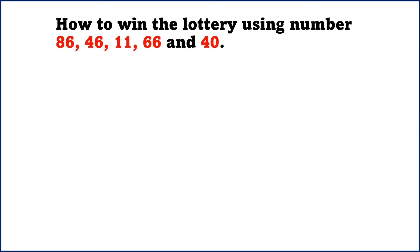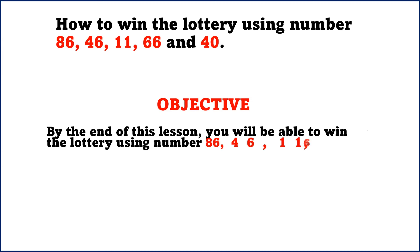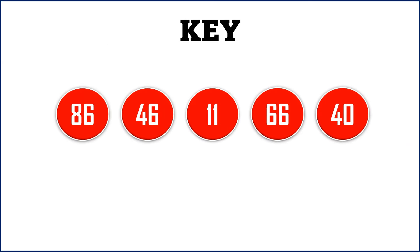This is for every 5/90 lottery system. The objective of this lesson is to get the winning ticket in the 5/90 lottery system, which means that by the end of this lesson you will be able to win the lottery using number 86-46-11-66-40 in every 5/90 lottery system across the group. The key numbers we are involving are 86, 46, 11, 66, and 40 — these are the five sequence key numbers.